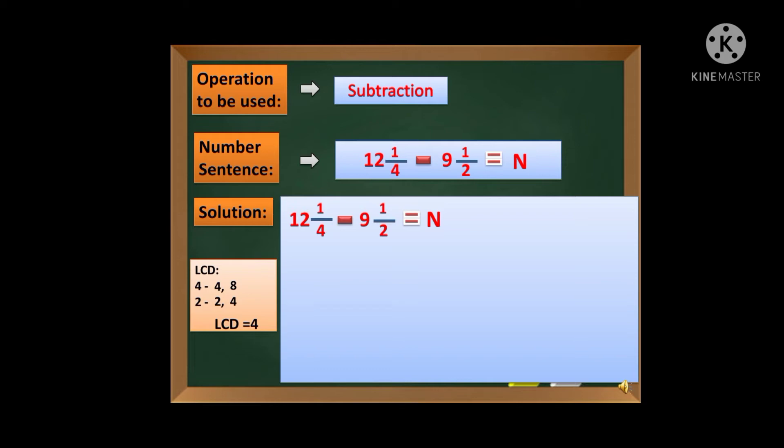Siya na po ang magiging nating bagong denominator. So 12 and one-fourth, ang gagawin po natin dyan i-re-rename po natin na copy na muna si whole number which is 12, then ang bago nating denominator is 4. So 4 divided by 4 is 1, times 1 is 1. At i-re-rename din ulit natin si 9 and one-half. Hindi na po ito ang kanyang denominator kundi 4. Kaya sulat na muna si whole number which is 9, then ang bagong denominator which is 4. 4 divided by 2 is 2, times 1 is equal to 2.